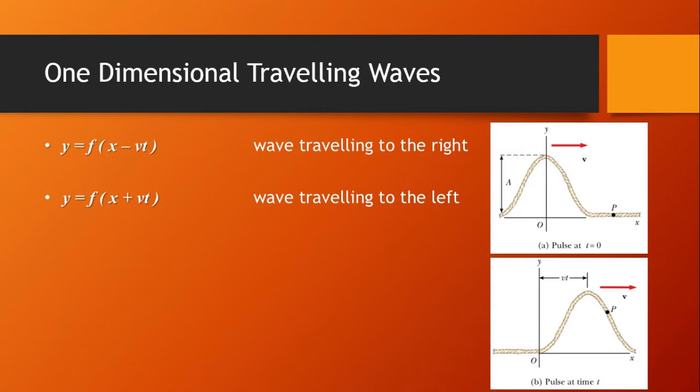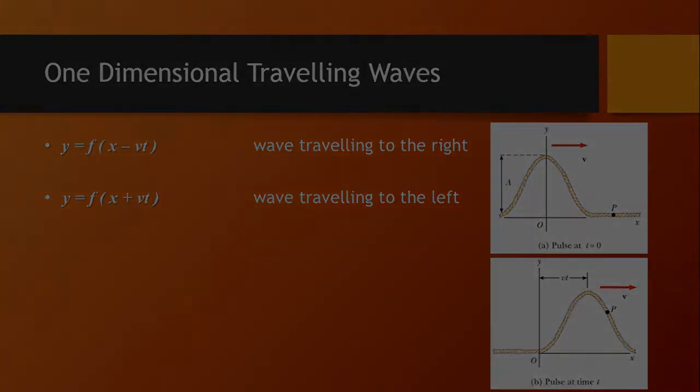For any given time t, the wave function y is a function of x that defines a curve representing the shape of the pulse at this time. This curve is equivalent to a snapshot of the wave at this time. For a pulse that moves without changing shape, the speed of the pulse is the same as that of any feature along the pulse, such as the crest.